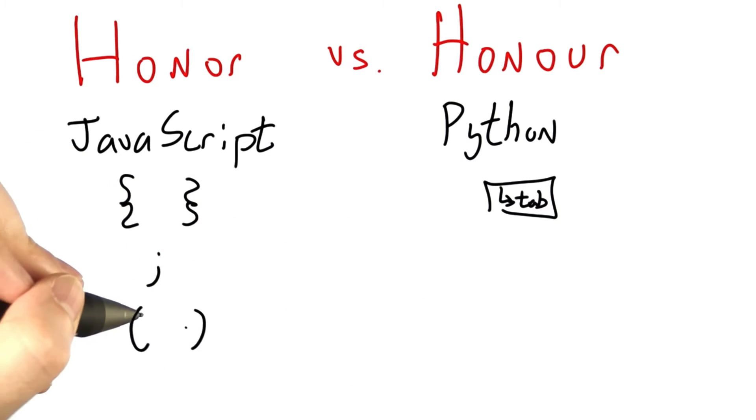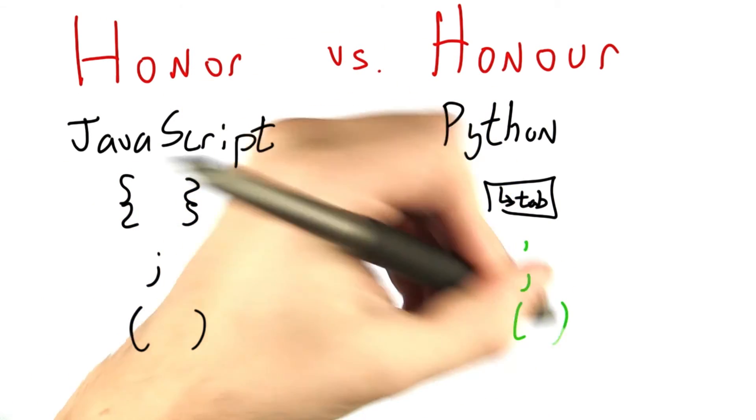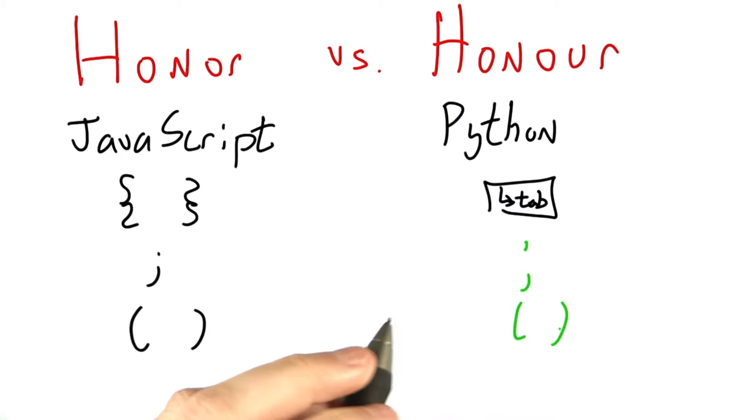JavaScript really loves parentheses. Python, eh, could take them or leave them. So Python could have these, could have these, but doesn't have to. They're somewhat optional.